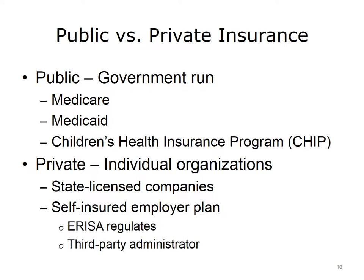Private health insurance is funded and run by individual organizations that are licensed by a state. Consumers usually obtain private insurance through their employer. In some cases, employers self-insure, in which case they finance and pay for all the health care expenditures of their employees. These plans use the guidelines in the Employee Retirement Income Security Act, or ERISA, legislation. In these plans, the employer administers the plan and assumes all the risk for the health care expenditures of its employees. An employer may contract the claims paperwork to a third-party administrator, or TPA. The remainder of this lecture will focus on private health insurance; government health insurance will be covered in the next lecture.